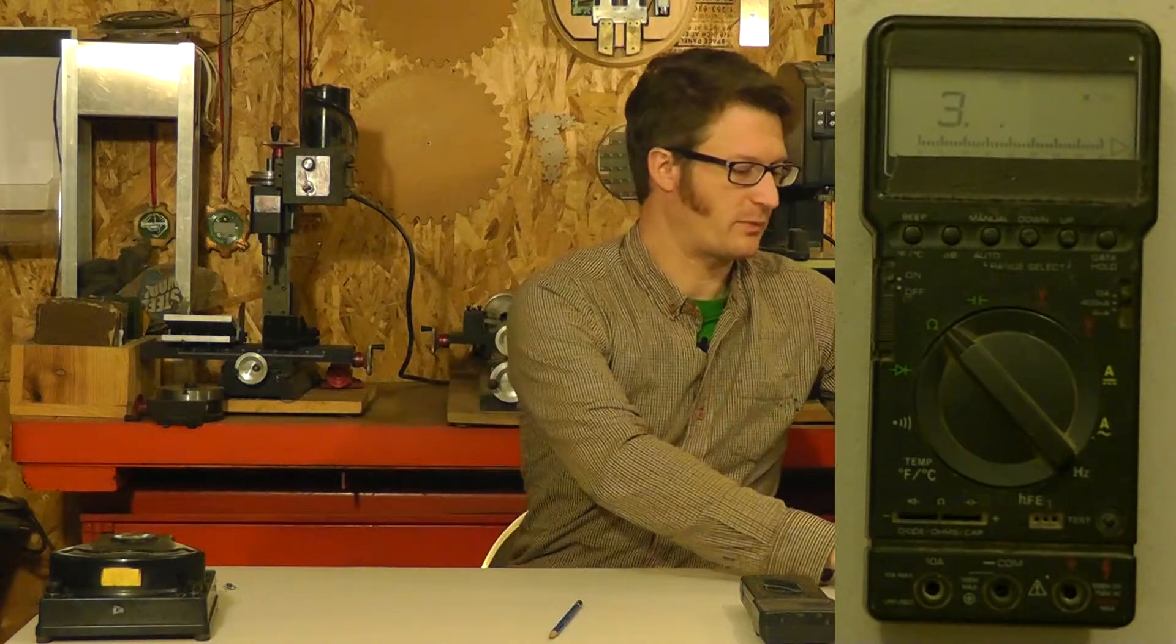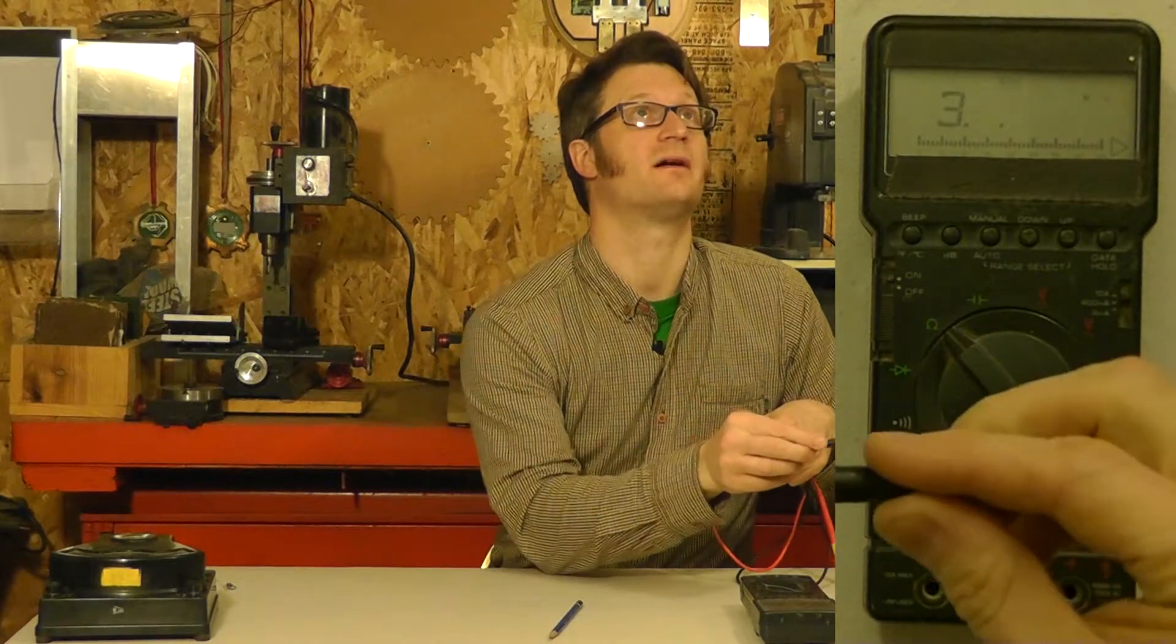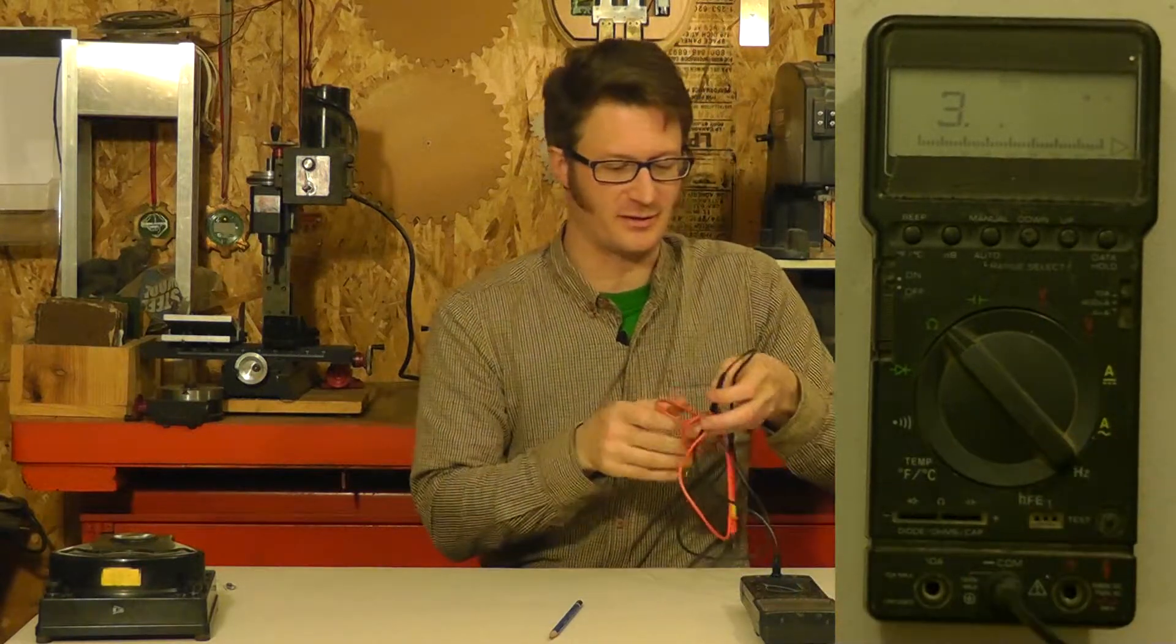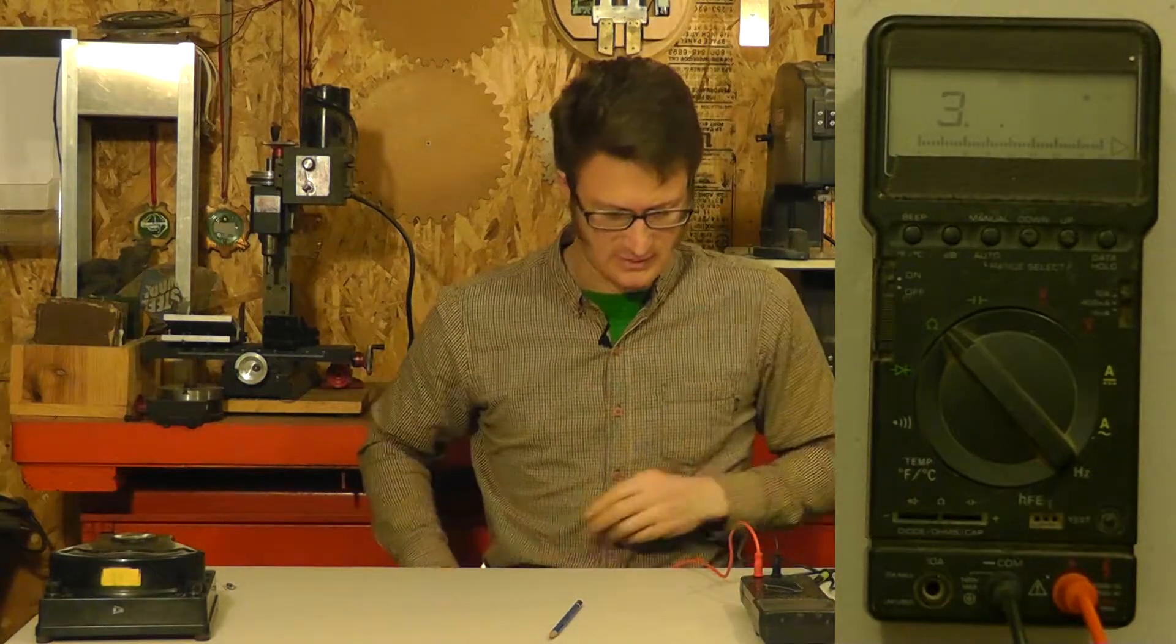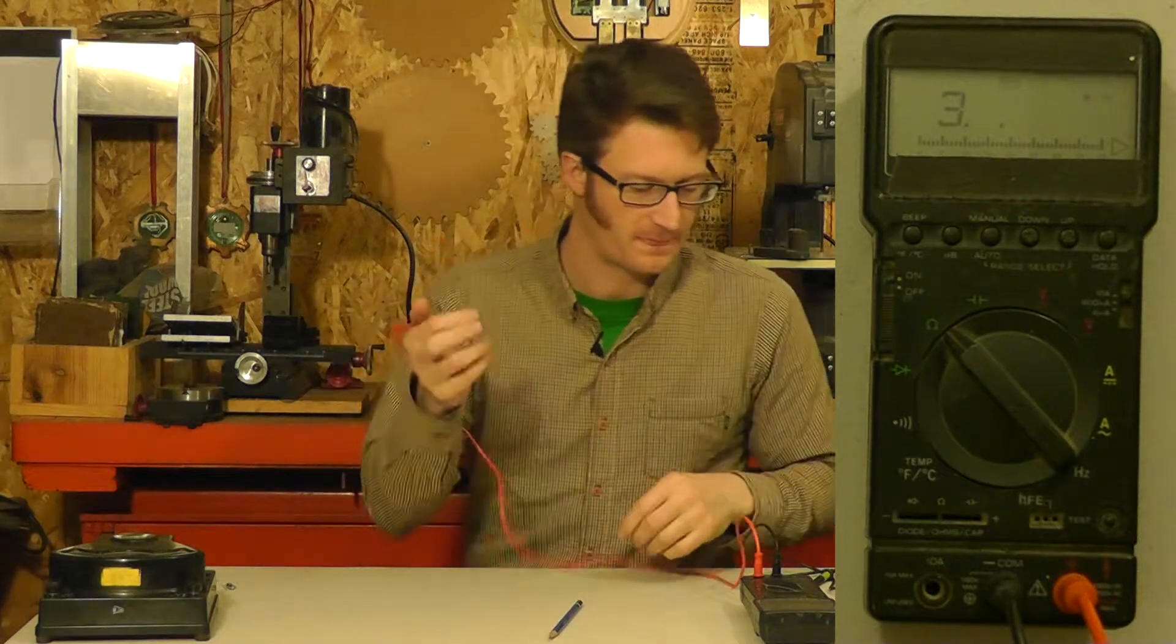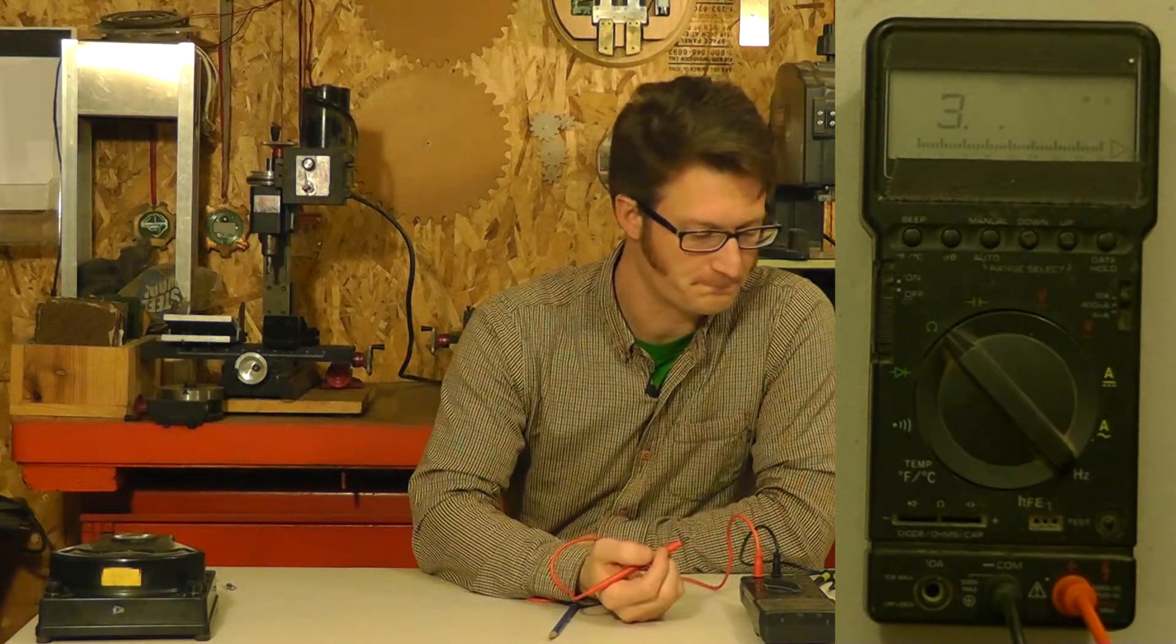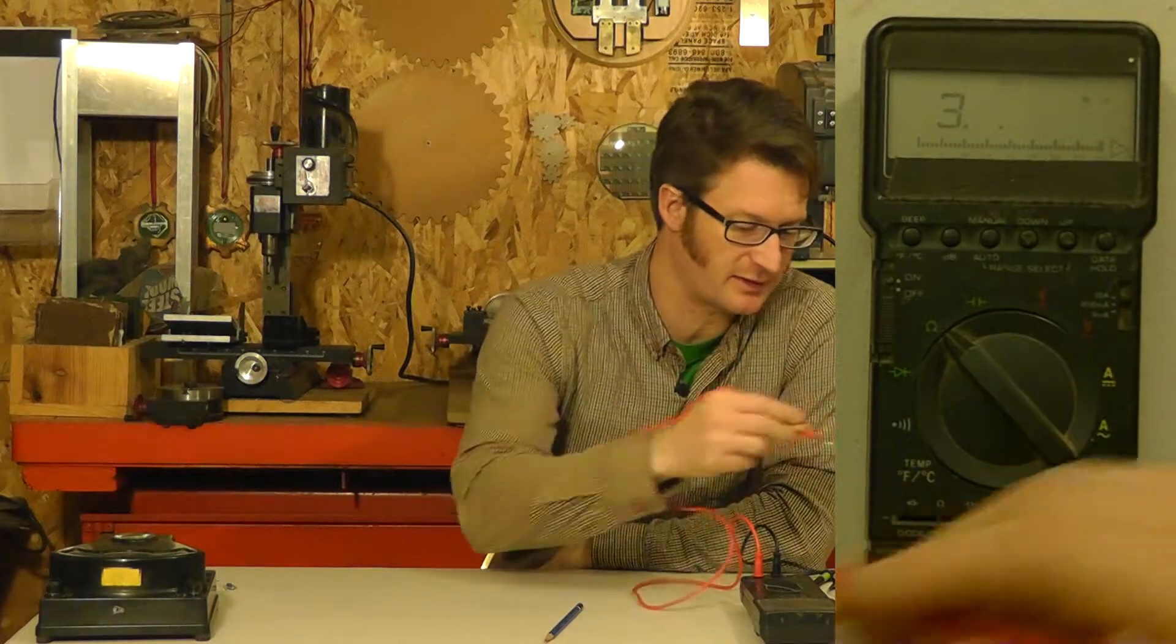Let's talk about probes. A better multimeter will have probes that have sort of standardized banana plugs, and it'll typically have three or more connectors. Three is pretty standard. Sometimes on a higher end one, you'll have four. Typically, the ones that you'll be connected to are on the right.